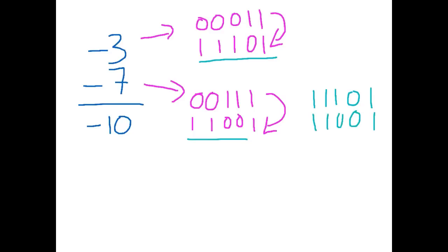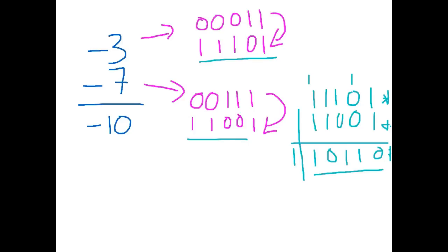Adding: 1 and 1 is 0 carry the 1; 1, 0, and 0 is 1; 1 and 0 is 1; 1 and 1 is 0 carry the 1. We have 5 bits in our problem but 6 bits in the result, so we truncate the carry. The leftmost bit is a 1, so we know it is a negative answer. We take the 2's complement: keep until the first 1, keep that 1, change everything after. Place values are 1, 2, 4, 8 — 8 plus 2 is 10 — so we have a negative 10.